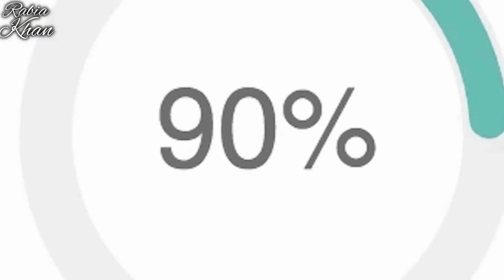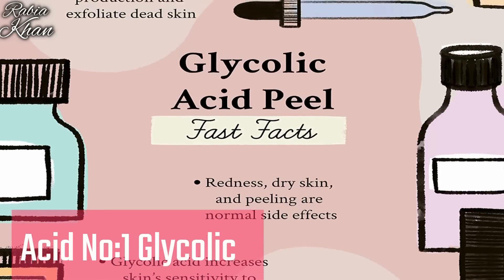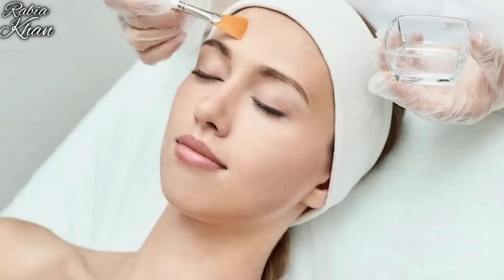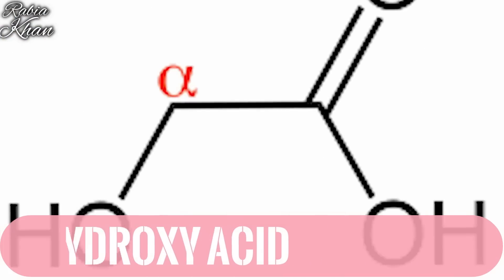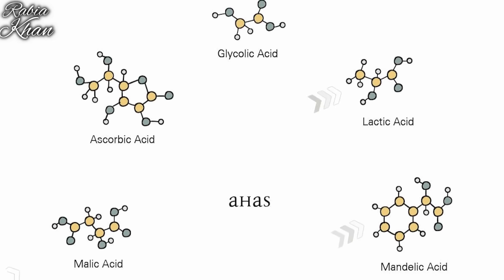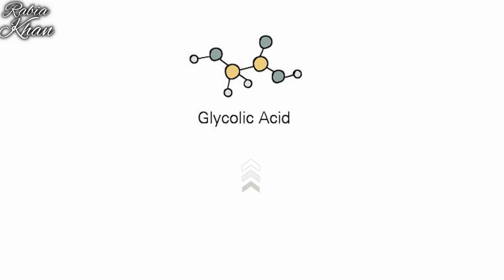Number 1: Dermatologists recommend glycolic acid for 90% of skin problems. It is a type of acid you will see recommended from teenagers onward. Glycolic acid is a good thing — it is an alpha hydroxy acid. Alpha hydroxy acid is great. There are many AHAs like lactic acid, malic acid, and others, but the most effective of all is glycolic acid.